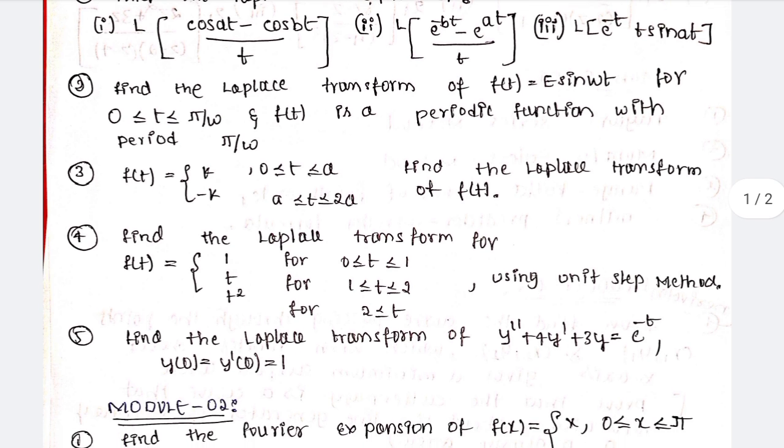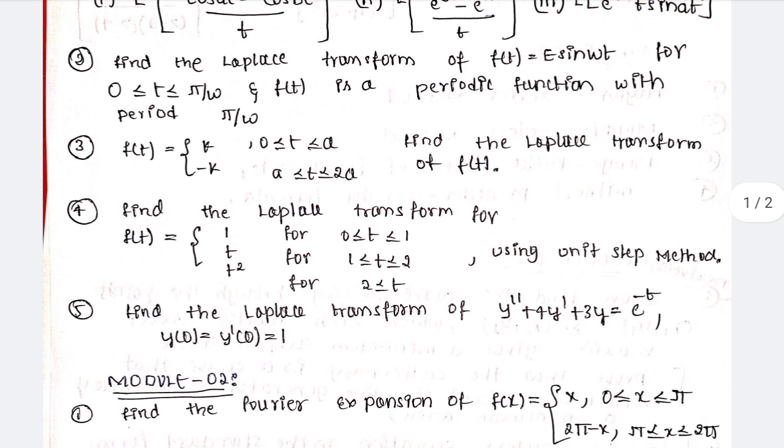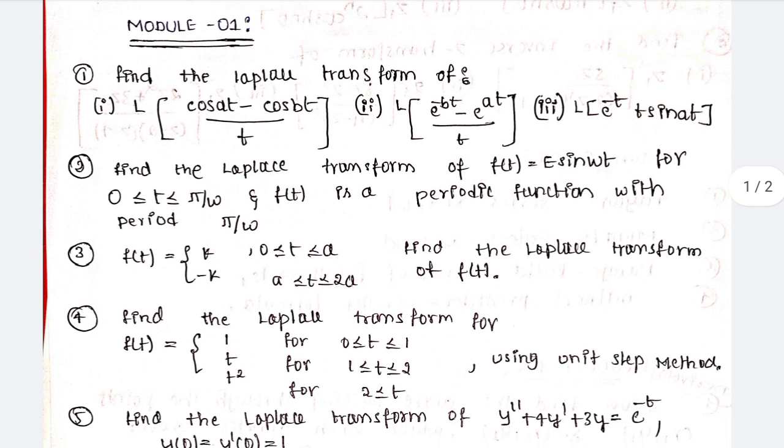Next question, fourth question: Find the Laplace transform for f(t) = 1, t, t² using unit step method. I have the PDF, one to two pages in the description link. Download it. Next, again find the Laplace transform using unit step method. The Laplace transform of y'' + 4y' + 3y = e^(-t), y(0) = y'(0) = 1. Five questions are listed out by me for the first model.